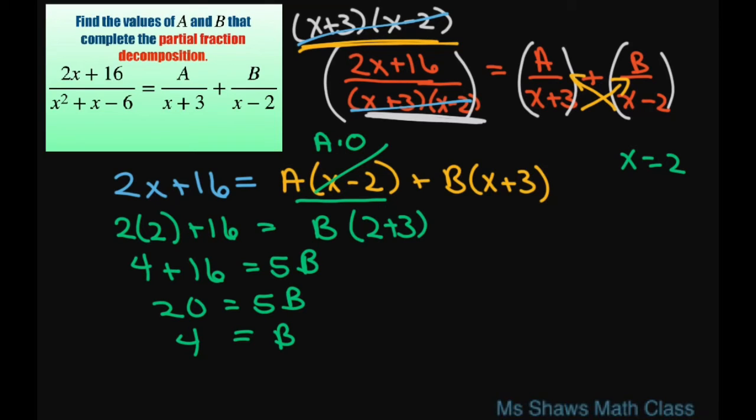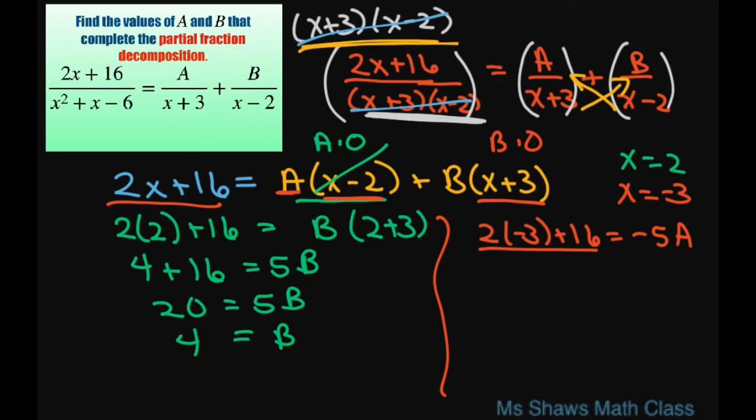To find our A, we do the same thing. Let's eliminate B. To eliminate B, we let x equal negative 3. That will make this B times 0. So everywhere there's an x, substitute in negative 3. So we get 2 times negative 3 plus 16 equals, when you plug negative 3 in here, you're going to get negative 5A. This is going to give you negative 6 plus 16 is 10 equals negative 5A. Divide both sides by negative 5, you get A equals negative 2. And that's all this problem asks for.